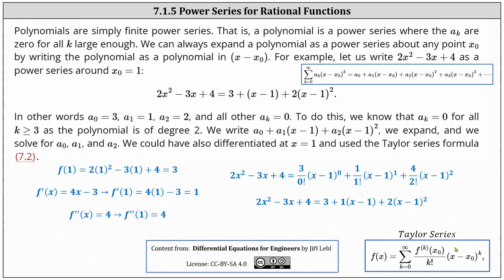I also want to show that work. To use the Taylor series formula, we first determine f of 1. f of 1 is equal to 2 times the square of 1 minus 3 times 1 plus 4, which is 3. Next, we find f prime of x, which is 4x minus 3, indicating f prime of 1 is equal to 1. And then we find f double prime of x, which is equal to 4, indicating f double prime of 1 is still 4. Now we apply the Taylor series formula for the first three terms: f of 1, which is 3, divided by 0 factorial times the quantity x minus 1 to the 0 power, plus f prime of 1, which is 1, divided by 1 factorial times one factor of x minus 1, and then plus f double prime of 1, which is 4, divided by 2 factorial times the square of x minus 1. Simplifying, we have 3 plus 1 times the quantity x minus 1 plus 2 times the square of the quantity x minus 1. Once again, a sub 0 equals 3, a sub 1 equals 1, and a sub 2 equals 2.